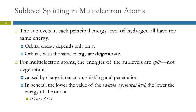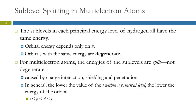In hydrogen, the sublevels within each principal energy level all have the same energy — for example, the 2s and 2p sublevels are the same. The energy depends only on the principal quantum number. Orbitals with the same energy are called degenerate. When you have more than one electron, the energies of the sublevels split due to charge interactions, shielding, and penetration. Within a given principal level, energy increases in the order s, p, d, f — as l gets larger, energy increases.